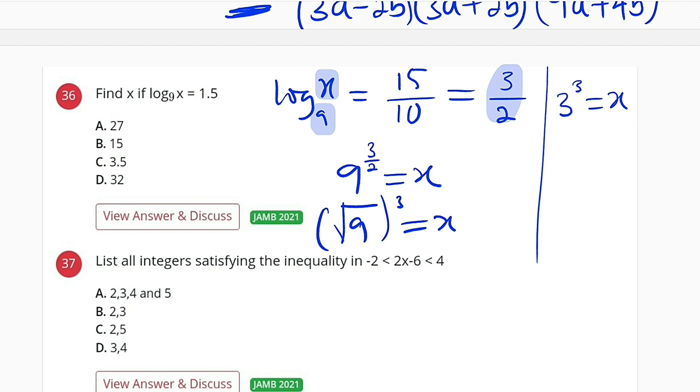3 times 3 is 9, times 3 is 27. Therefore, x is equal to 27. Do we have it? Yes, option A.